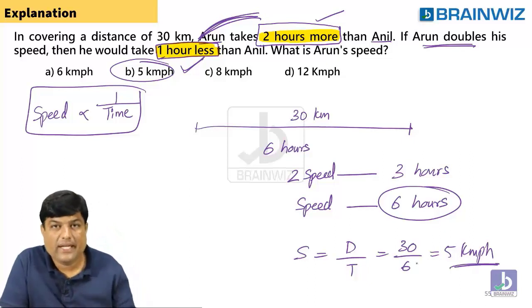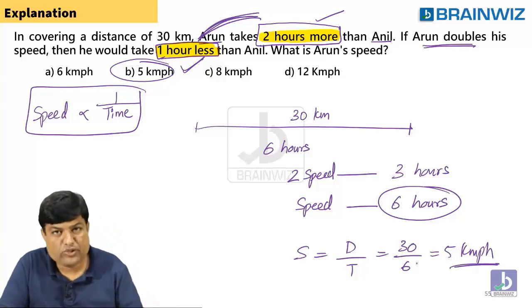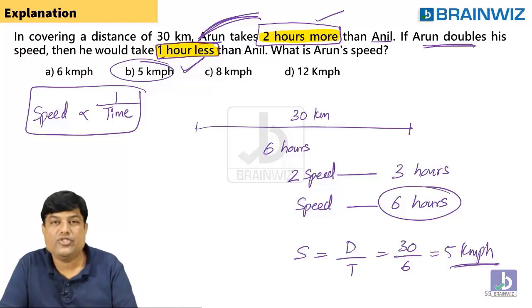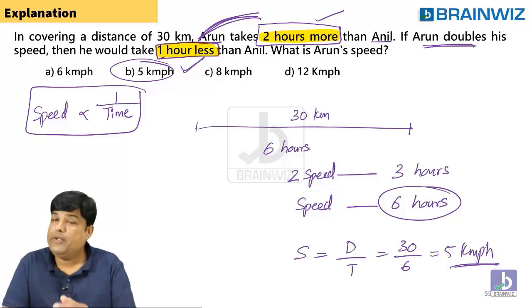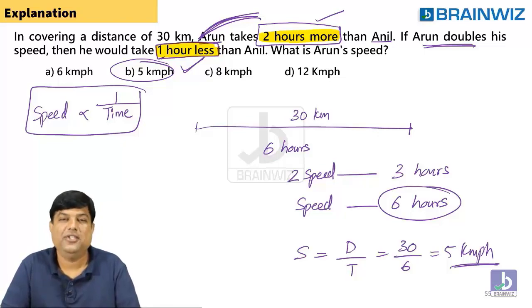Don't use the x, y method — it's a very long approach. Going with options is also one of the fastest ways, but you have to check every option. If you know the concept and the inverse proportionality trick, you will save time. Thank you.